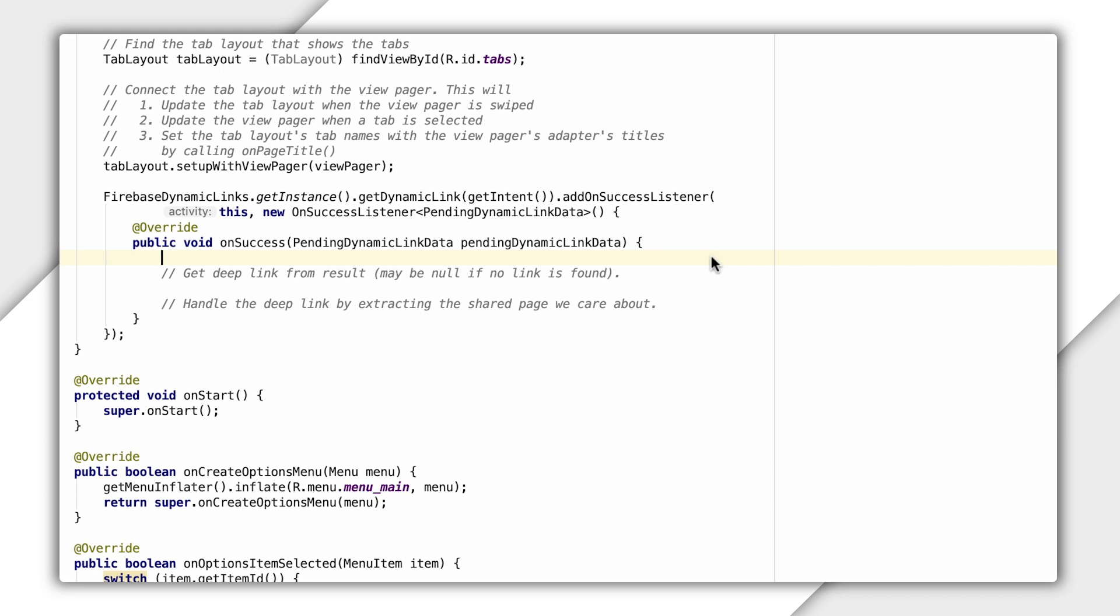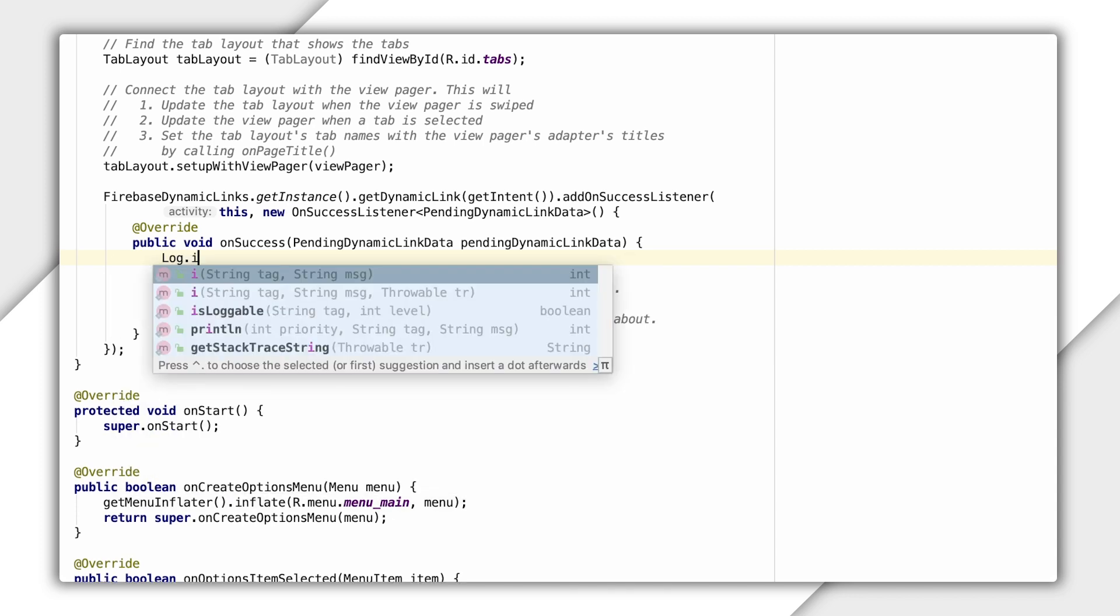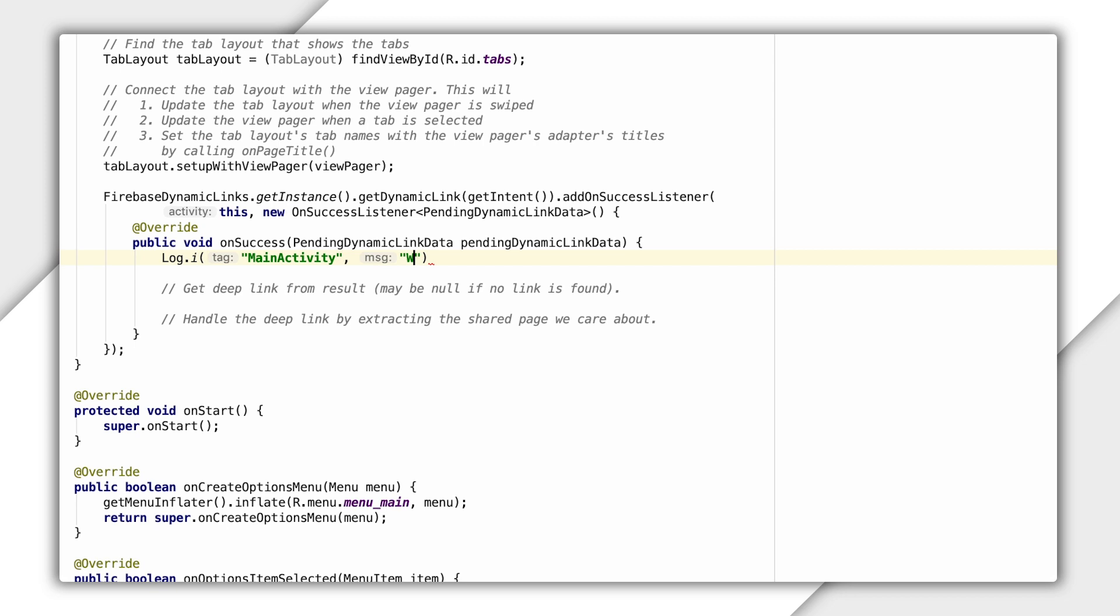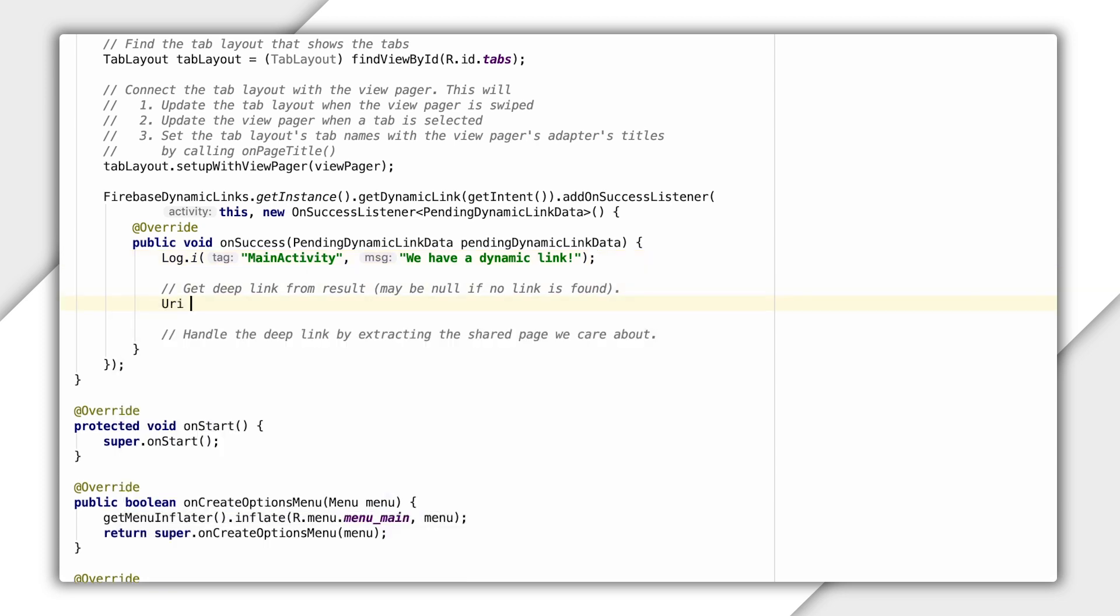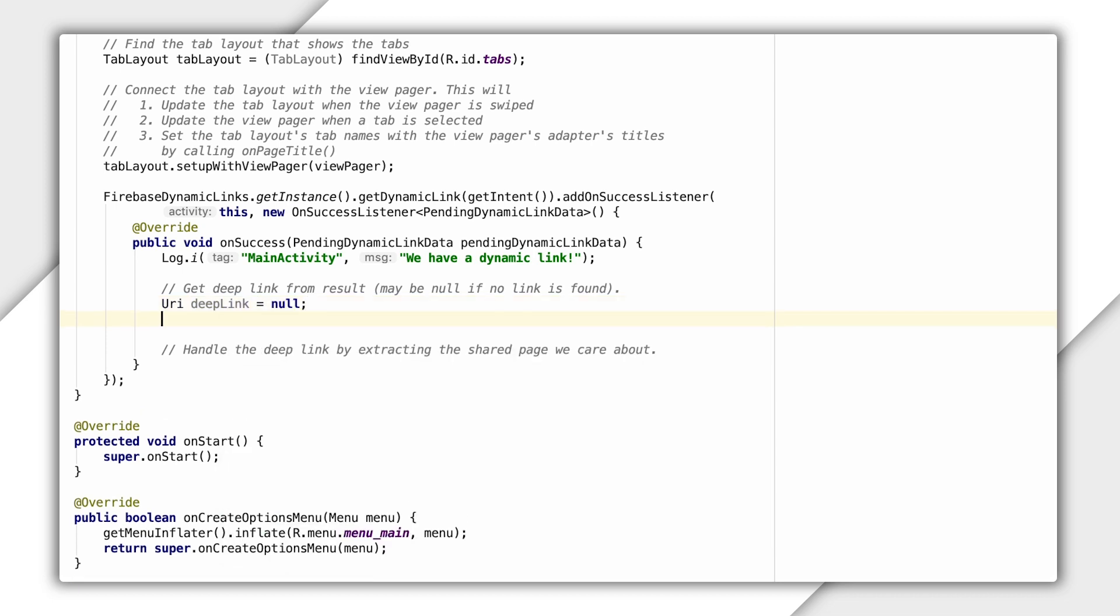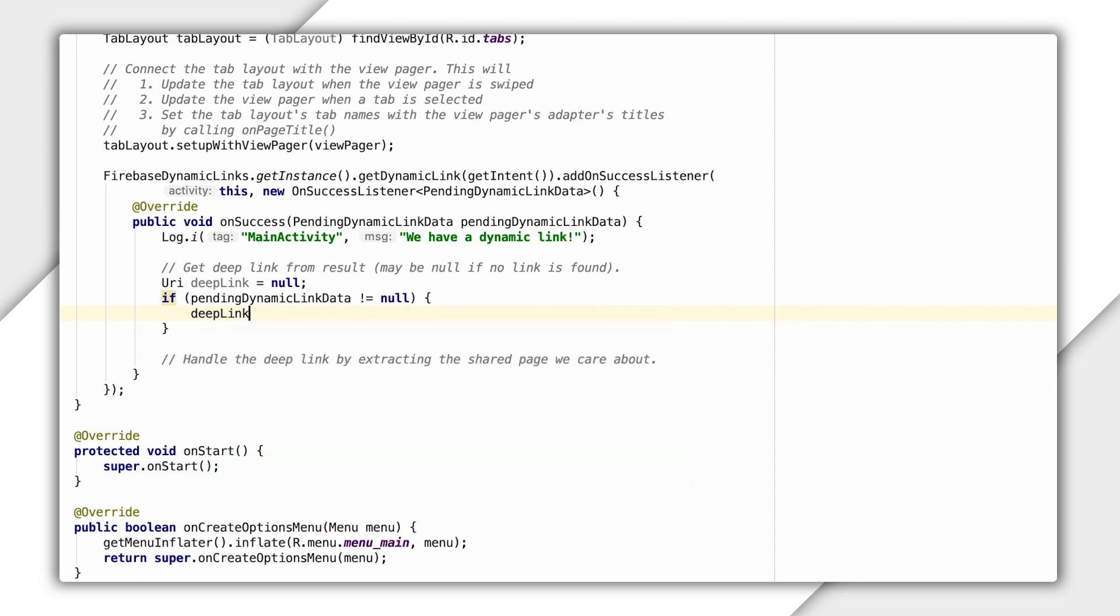Okay, now let's get back to completing our onSuccessListener. So when I've successfully received the Dynamic Link, let me first just log that to make sure I know we've got our link. So I'll add in a call here like so, log.i for my main activity, and let me log the message we have a Dynamic Link. Great, now that we've got our link, let's extract the Deep Link URL. So I'll do that by creating a variable handle for the Deep Link URI object and do a null check on my pending Dynamic Link data, just to be safe, and then extract the Deep Link data to my URI variable. Nice.